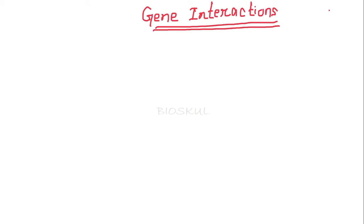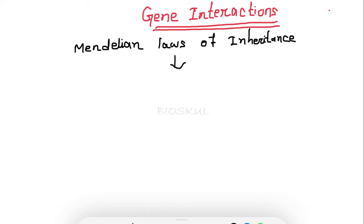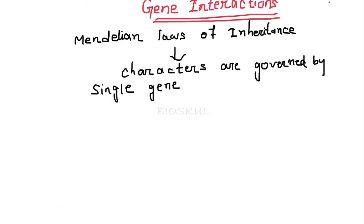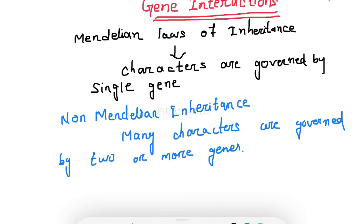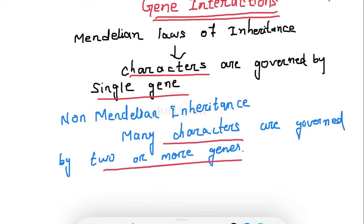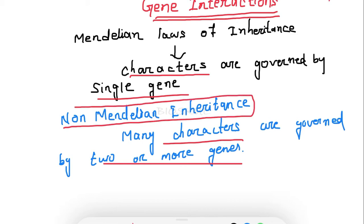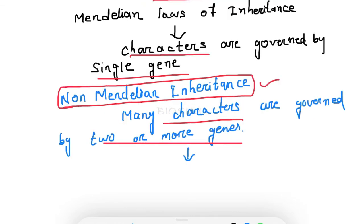We are going to get a clear idea about inter-allelic gene interactions and the types of gene interactions. According to Mendelian laws of inheritance, characters are governed by a single gene. But later on, it was realized that there are many characters which are governed by two or more genes. This is a type of non-Mendelian inheritance, and gene interaction is a type of non-Mendelian inheritance.